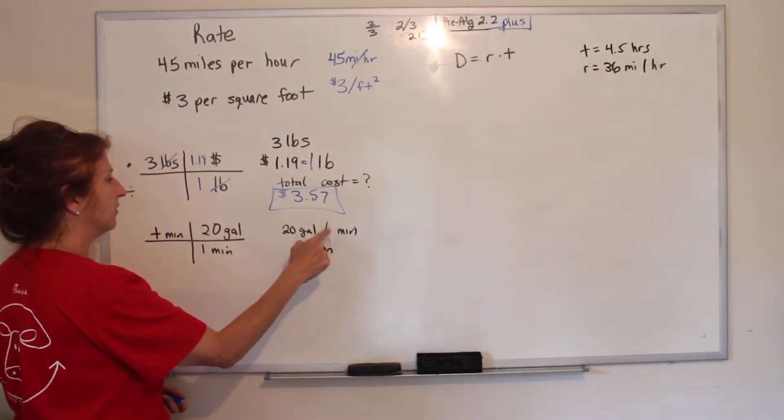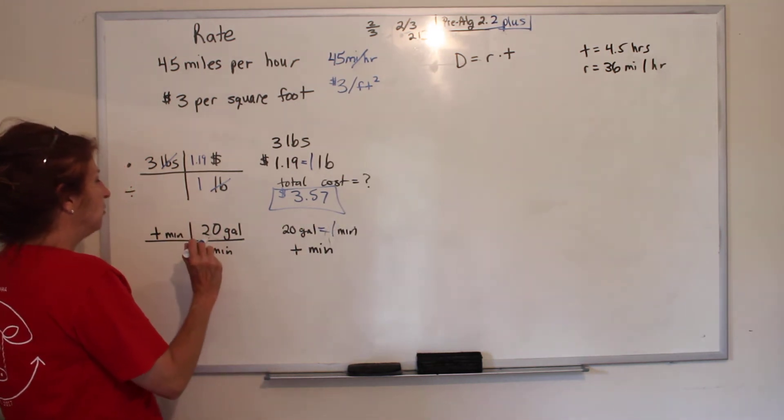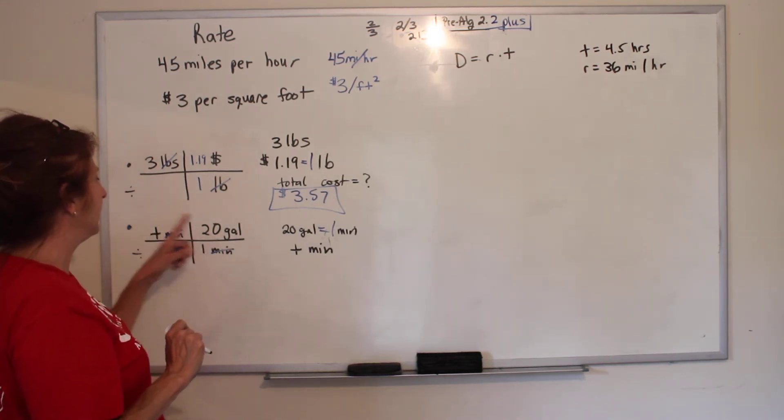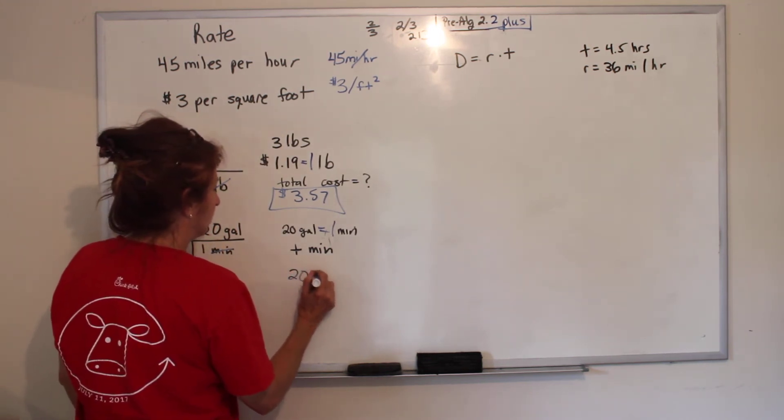20 gallons equals one minute. So the minutes will cancel out. Any number on top we multiply. Any number on bottom we divide. T times 20 divided by one is 20T, because anything divided by one is itself.